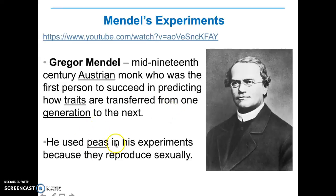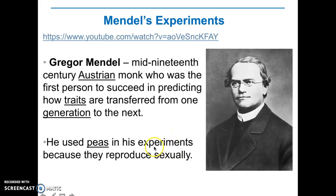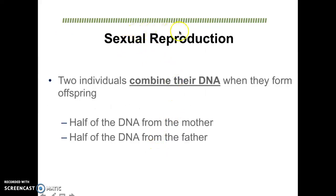He actually used peas in order to do his experiments. Make sure that you watch the linked video before you continue with this video lecture. He used peas because they obviously reproduce sexually — just like any other organism that reproduces sexually. So, there's sperm, there's egg, and there's offspring from the joining of those two gamete cells.